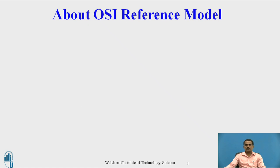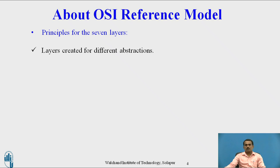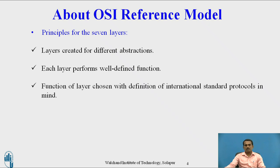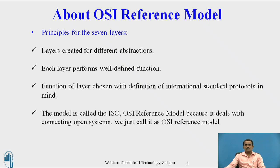First is the physical layer of the OSI reference model. The principle for the 7 layers is that they are created for different abstractions — each layer performs well-defined functions in a communication. Functions for each layer are chosen with the definition of international standard protocols in mind. Each layer can contain different protocols for different purposes. The model is called OSI, that is Open System Interconnection, also known as the ISO reference model.